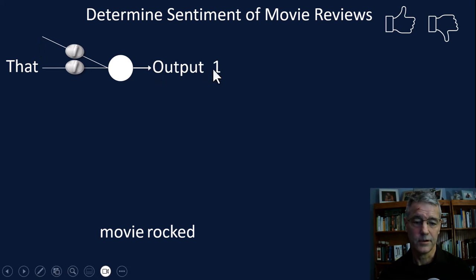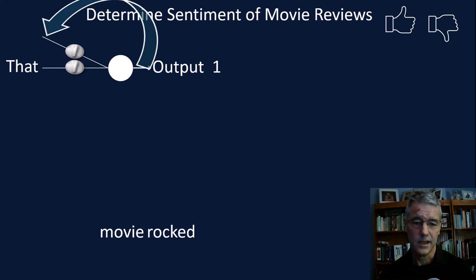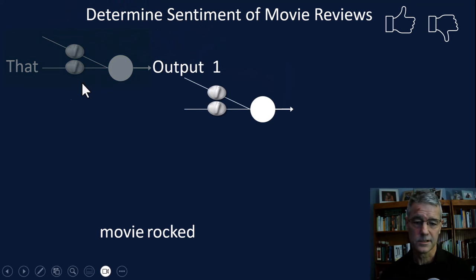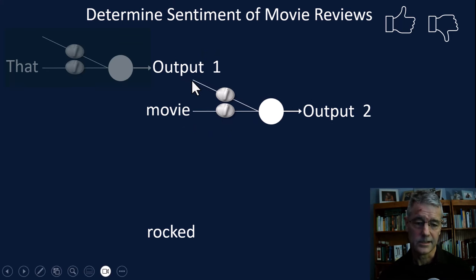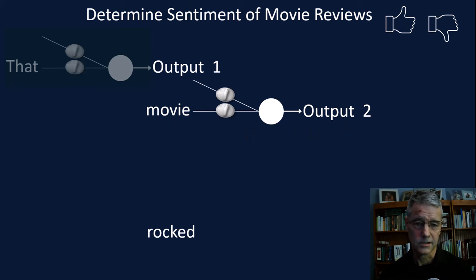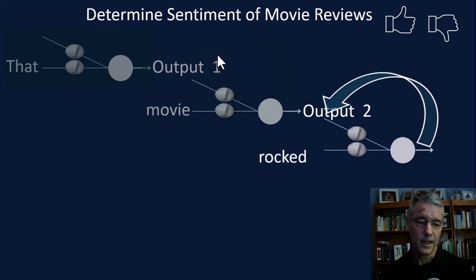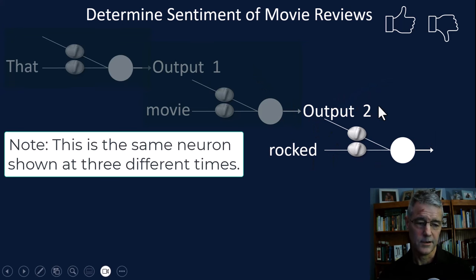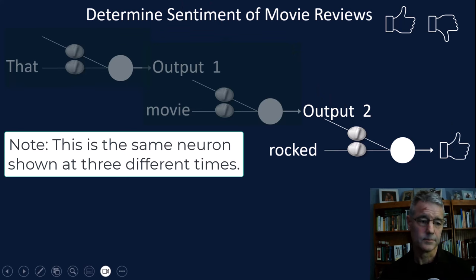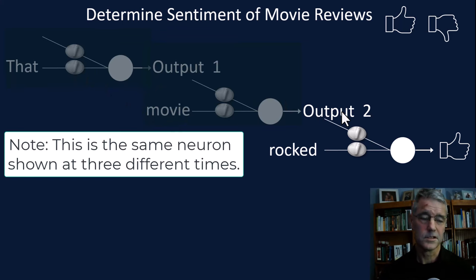That generates an output we call output one. We don't immediately use that output, but the network keeps an internal state and loops it around to that second input on the next time stamp — time one, time two. At time two, it loops output one back around to the second input, then moves the next word in — 'movie' — and generates output two. That internal state is looped around again. Then 'rocked' comes in as the input, and the output from the last time stamp comes into the second input. Now we've got all our inputs in, so we can actually generate a sentiment. If trained correctly, it'll generate a thumbs up, using these internal states to keep track of the sequence — much like an internal state of mind.